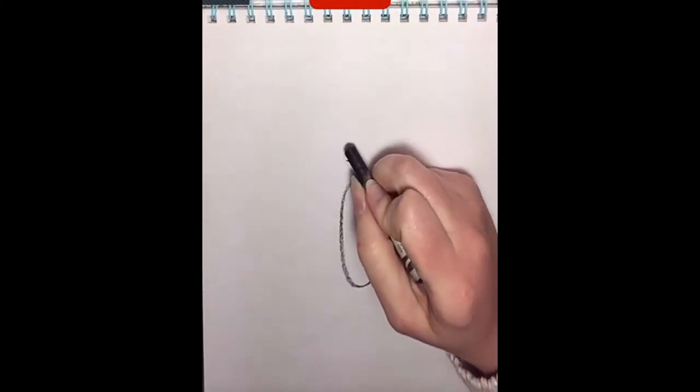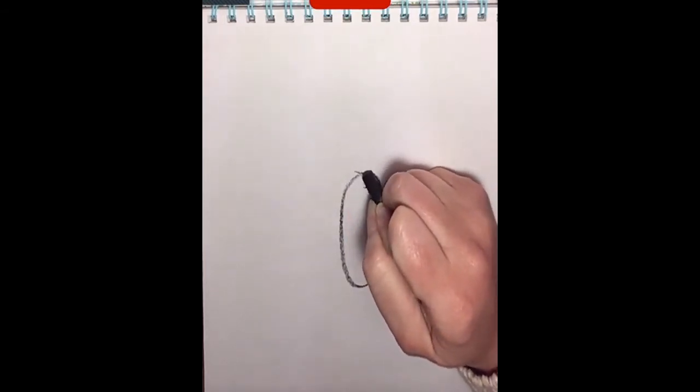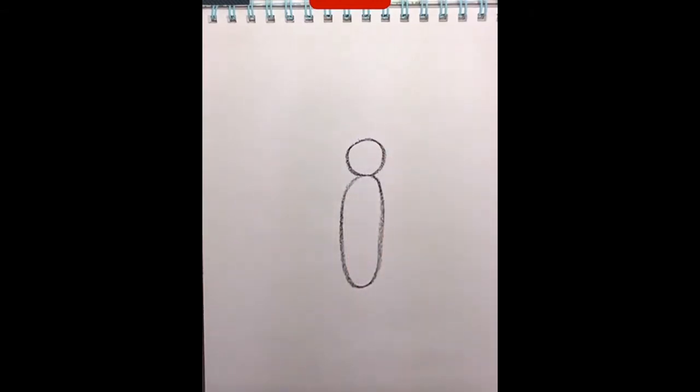The next thing we're going to do is make a circle on top of our oval. So I'm going to come around like this, make a circle. And again, you can always trace something that's shaped like a circle too.